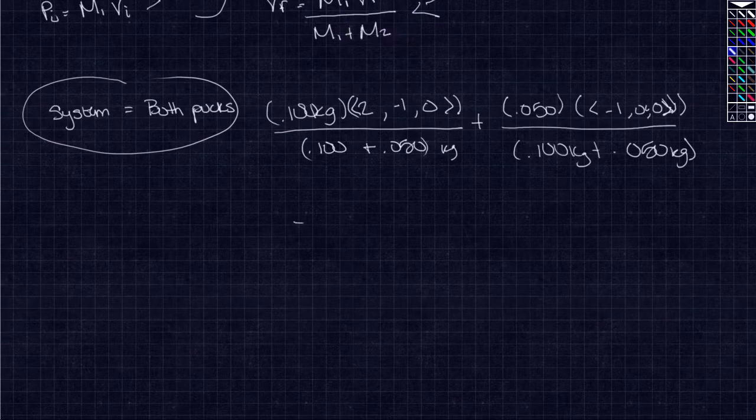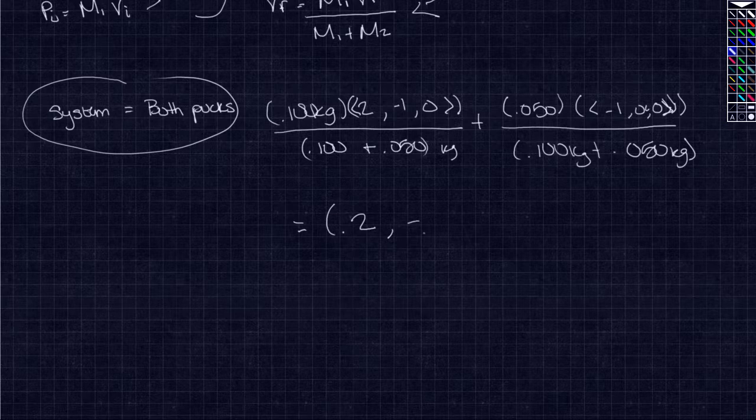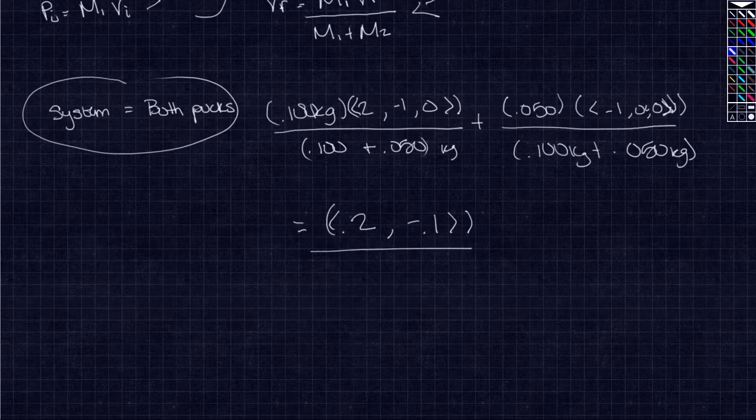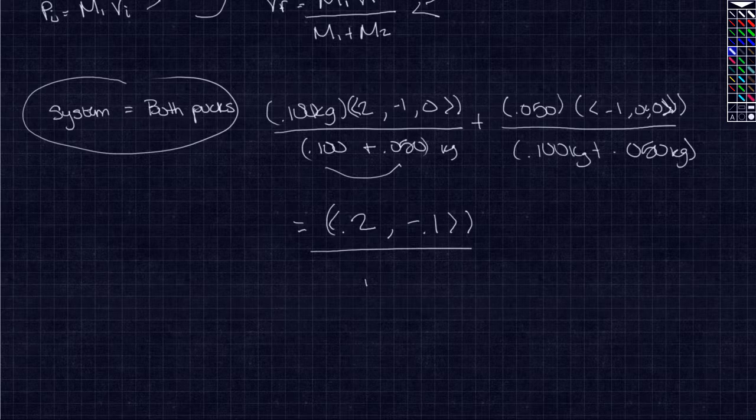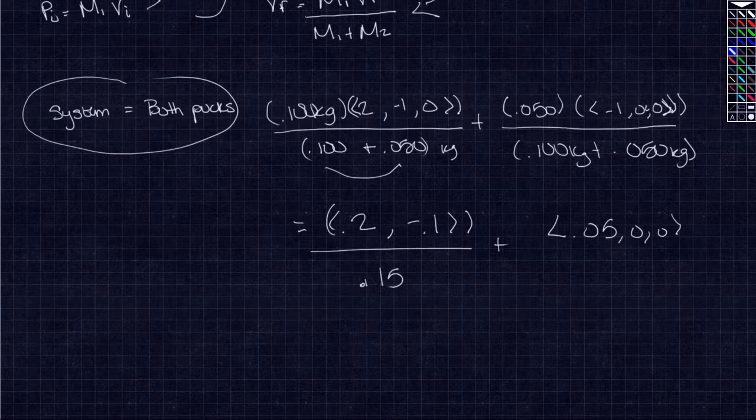Simplification: distributing everything, we get 0.2, negative 0.1 over these two. Add it together, which gives us 0.15. We add that to 0.05, 0, 0 over 0.15.